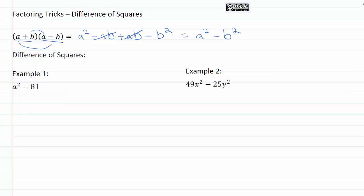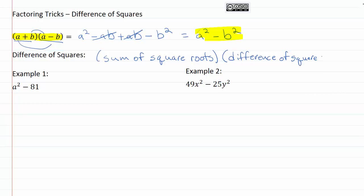We're now going to use this trick backwards, so that when we're factoring we can go from this back to the factored form — two expressions multiplied together. When we're looking at the difference of squares, which is what we call this — a square number minus a square number — we can break it down into the sum of the square roots times the difference of the square roots. The square root of a squared is a, and the square root of b squared is b, giving us a plus b times a minus b.